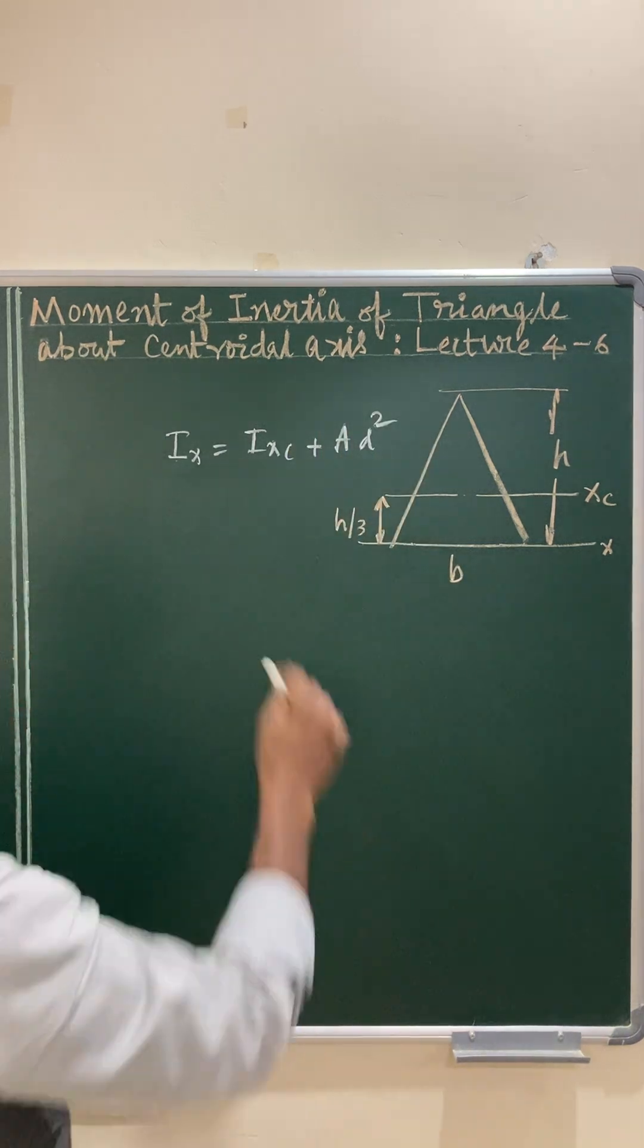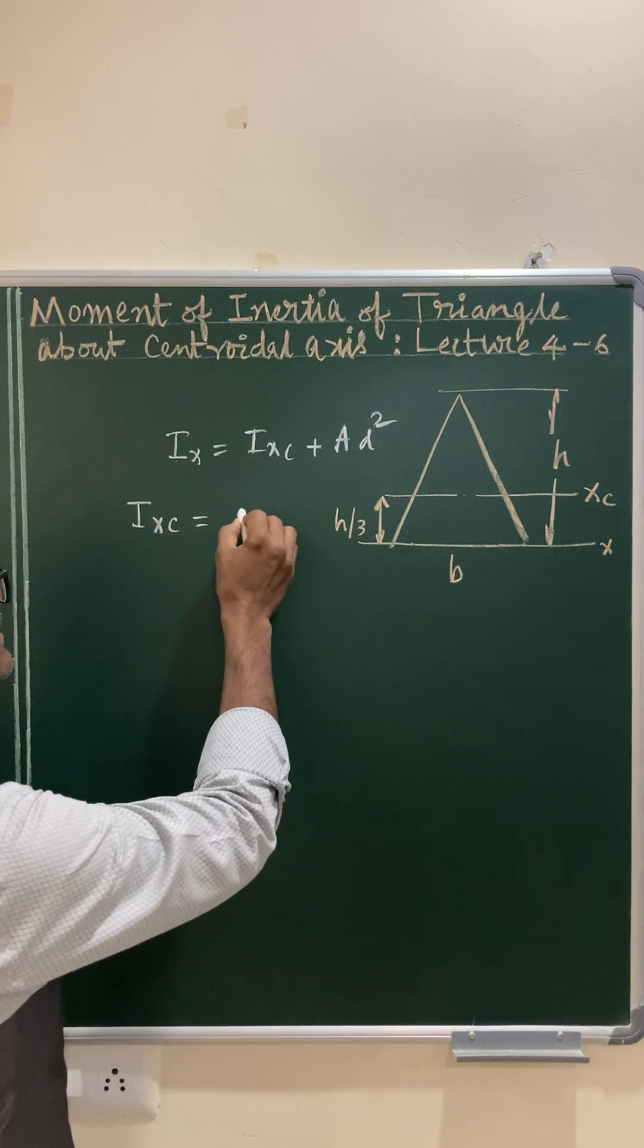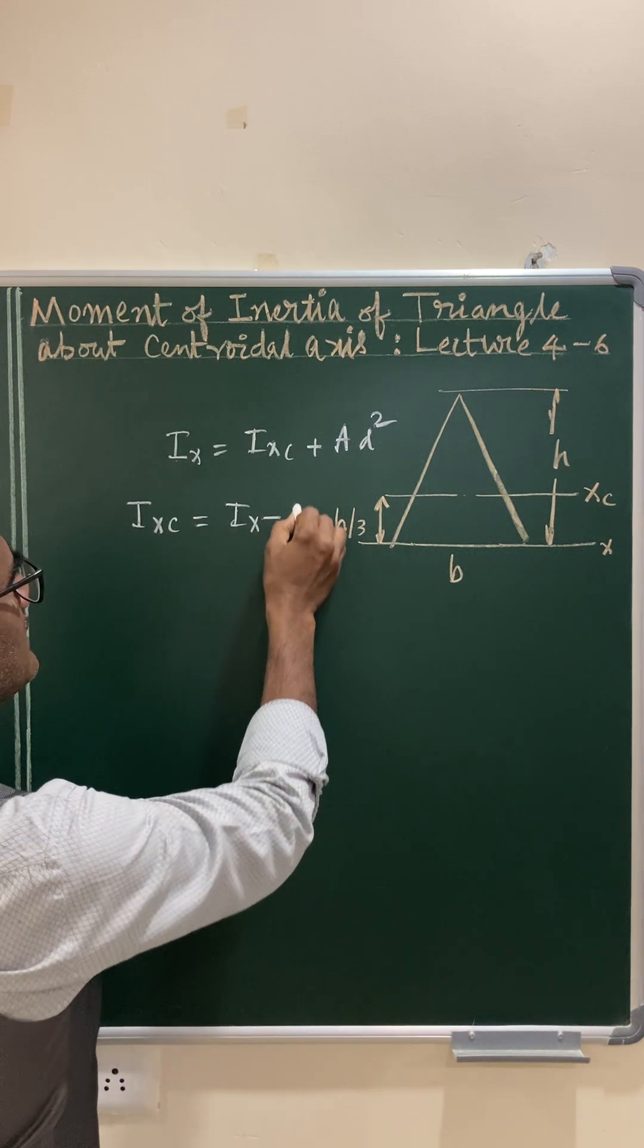Ad squared is the transfer term. In this, you have to calculate Ixc, which equals Ix minus Ad squared.